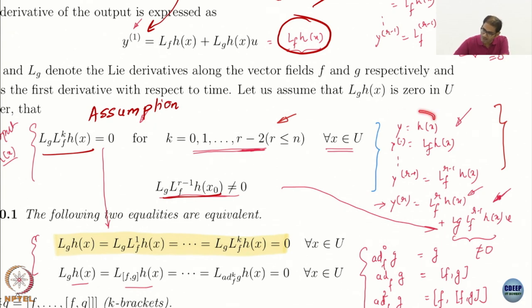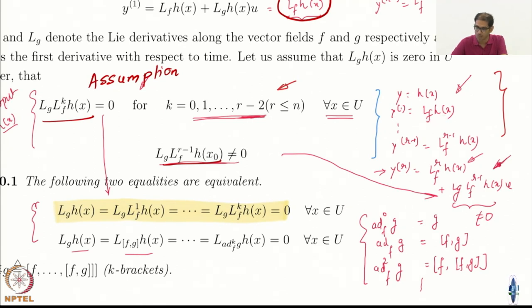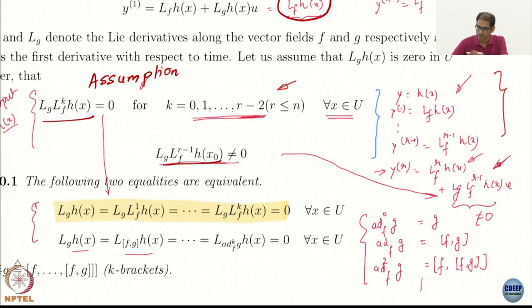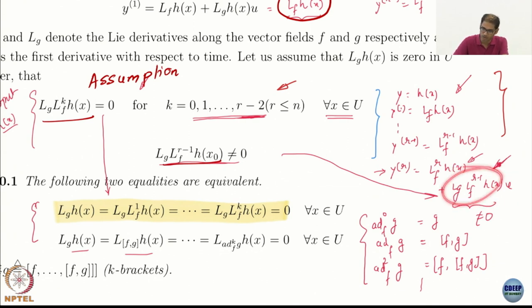I choose y as h; its first derivative is Lf h because the control term is 0 by virtue of the relative degree assumption. The second derivative and so on also have 0 control, all the way to the (r−1)th derivative — no control — because of this assumption. But when I take the rth derivative, the control appears because this term is now not 0.